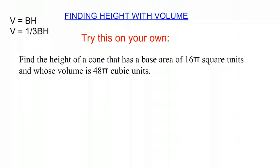Now I'd like you to try this one on your own. Find the height of a cone that has a base area of 16 pi square units and whose volume is 48 pi cubic units. Make sure you use the correct formula — V equals B times H, or V equals one-third B times H — and then try to find that H. Good luck!